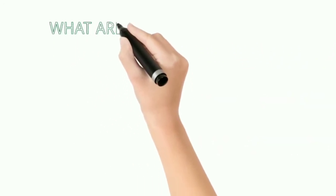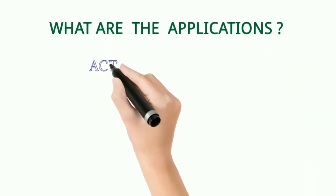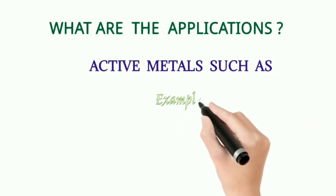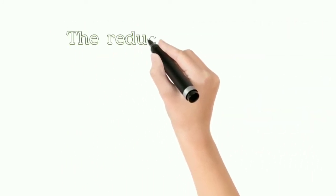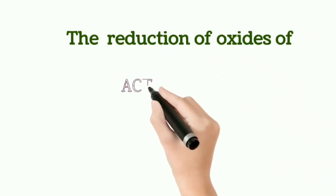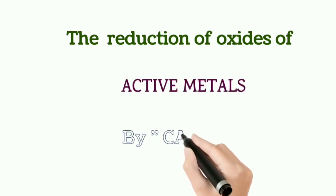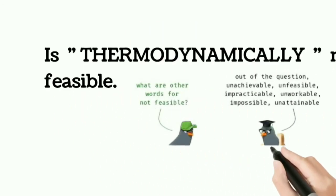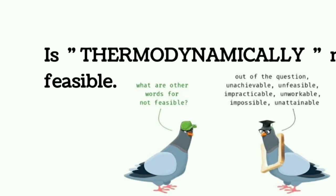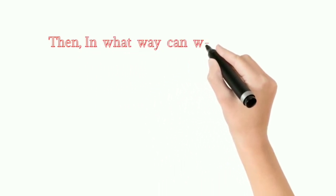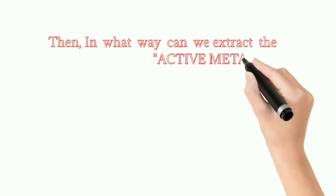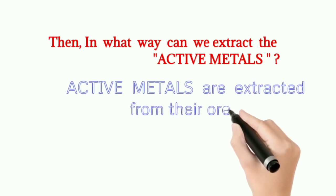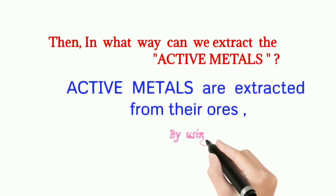What are the applications? Active metals such as potassium, sodium, magnesium, and aluminium — these are all active metals. These metals cannot be reduced by carbon; that is, the reduction of oxides of these active metals cannot be done by carbon, and it is not thermodynamically feasible — meaning it is impossible. So the active metals are extracted by using electrochemical methods.